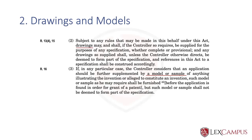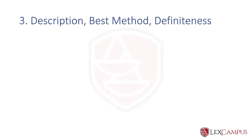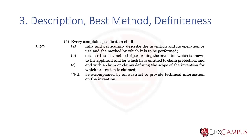The third thing to remember in Section 10 is that Section 10.4 covers description, best method, and definiteness of claim. Section 10.4(A) states that the complete specification shall fully and particularly describe the invention, disclose the best method, and end with a claim or claims defining the scope. Defining the scope is what we call definiteness of the claim.